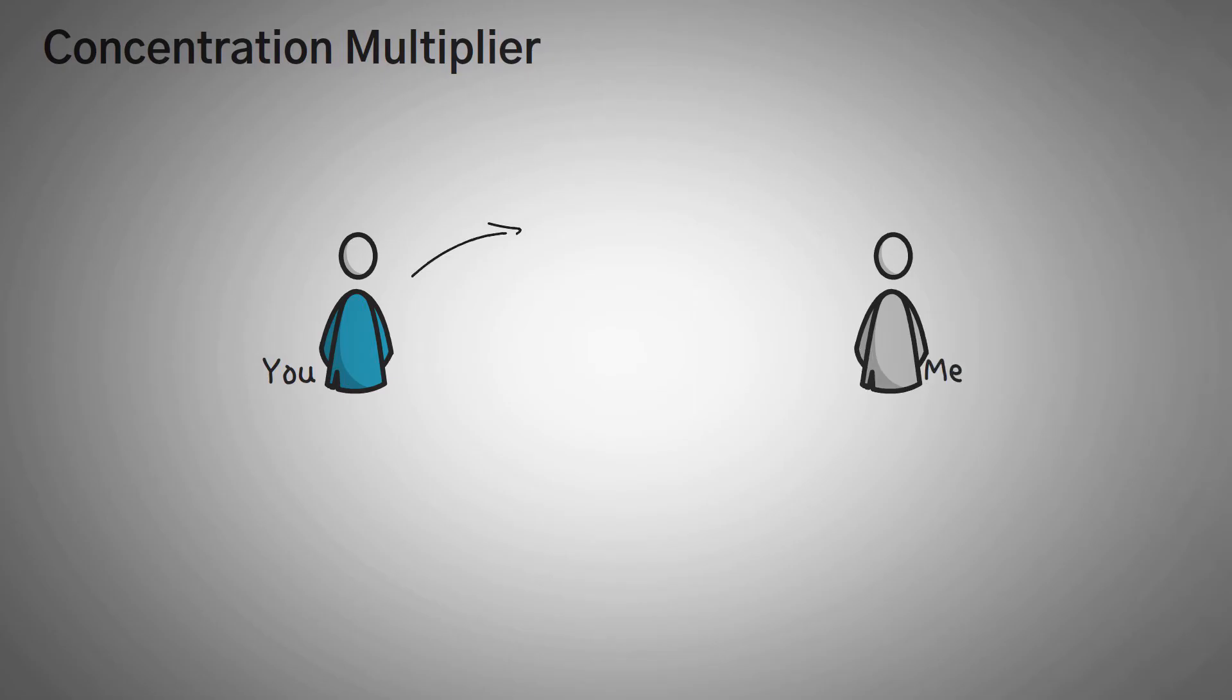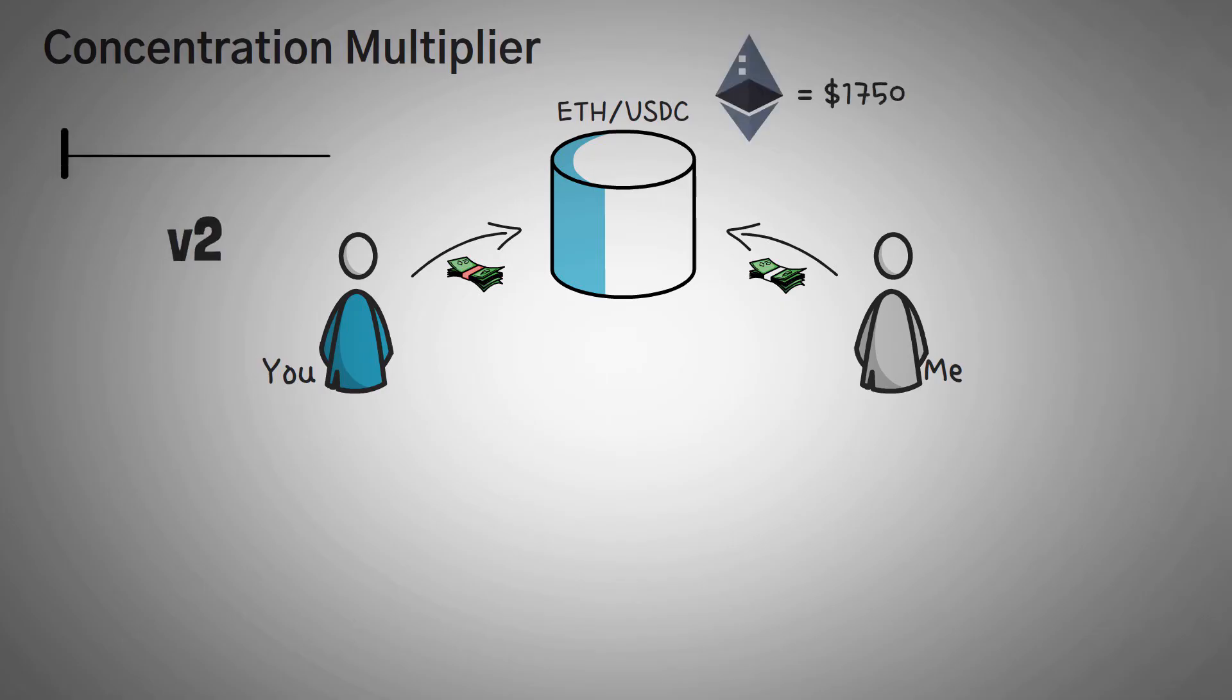Next up, we have the concentration multiplier. So let's go over an example of why this matters. Here at Whiteboard Crypto, we love examples. Me and you both supply liquidity to an Ethereum and USDC liquidity pool. Now for this example, let's assume Ethereum is $1,750. You do it in the way that it was done in version two, where the liquidity is spread evenly across all price ranges. And you invested $10,000.